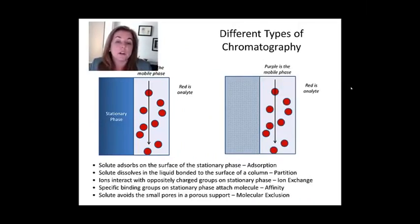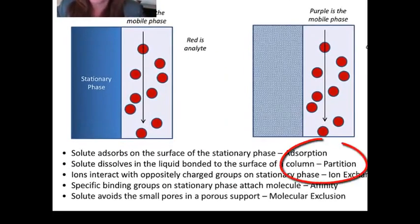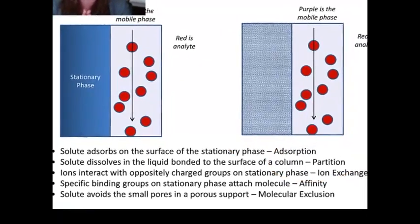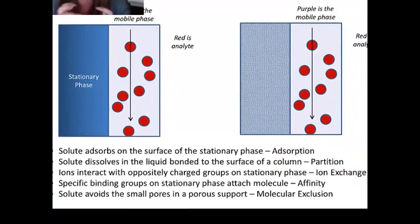You can have adsorption liquid chromatography where the analyte actually adsorbs and sticks on the surface of a column. Generally you don't want that, but you can elute it or remove it from the column later. You can do what we're most familiar with, which is partition chromatography, where you're partitioning thermodynamically into the stationary phase. You can do ion exchange, in which the nature of the interaction with the stationary phase is mediated by ions.